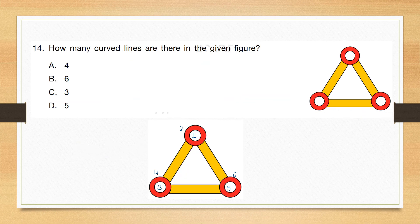Question number 14: How many curved lines are there in the given figure? There are 6 circles and 6 curved lines: 1st, 2nd, 3rd, 4th, 5th and 6th. So there are 6 curved lines.